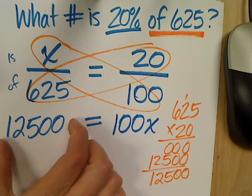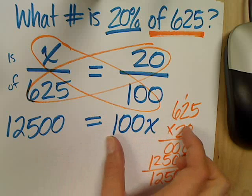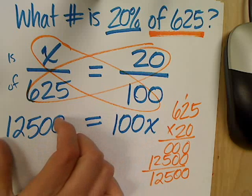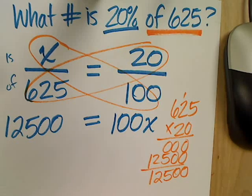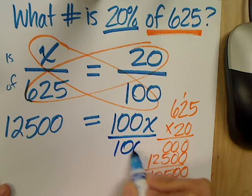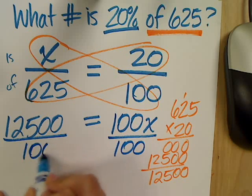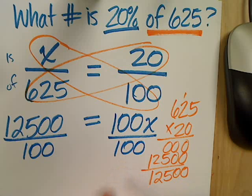So, now remember, if my 12,500 were on this side and my 100X were on that side, that's okay. You'd still get the same answer. So, Devin, what's my next step? To divide by what? By 100, both sides, because it's an equation. What I do to one side, I have to do to the other.